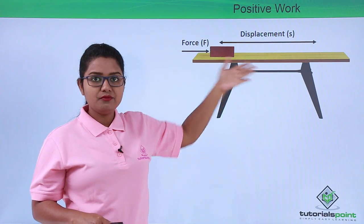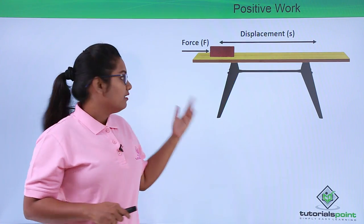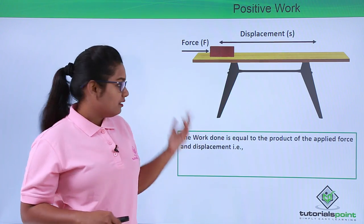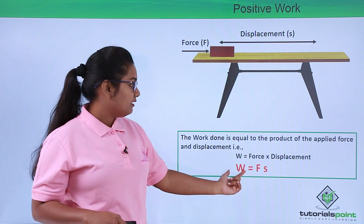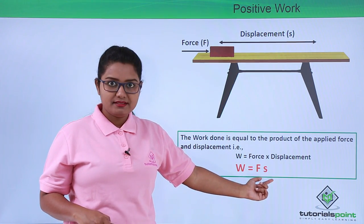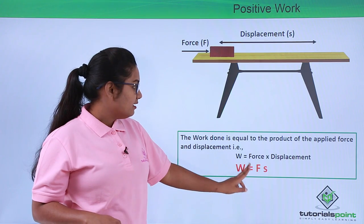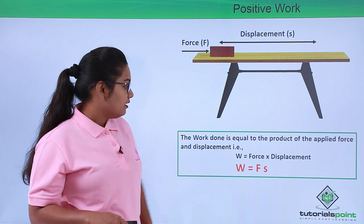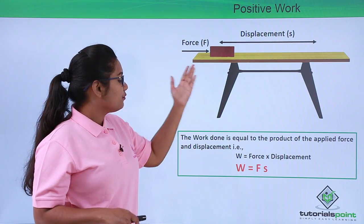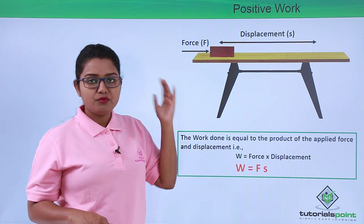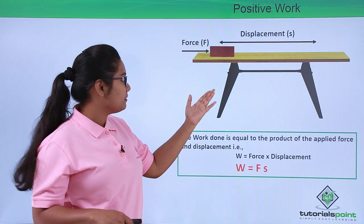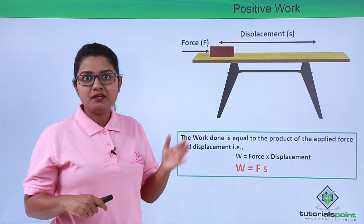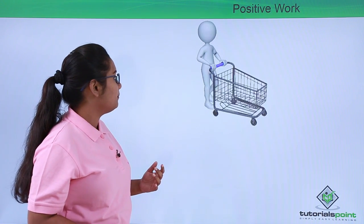Since force and displacement are in the same direction, the work done is W equals F times S. This is positive in nature, so the work done is said to be positive when the force and the displacement of the body are in the same direction.